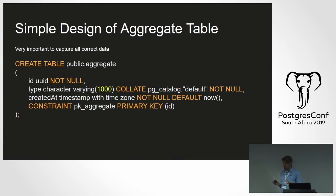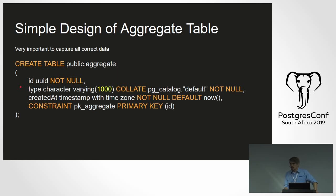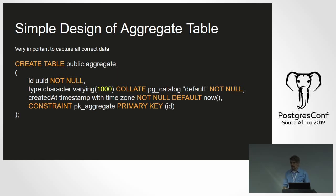Event stores are cool, but there's no cookie-cutter way to implement one. Unless you're doing a greenfield project, it's probably going to need a whole lot of panel-beating to work in any solution. So here's a spoiler: this is what an aggregate table looks like. You want to capture as much important information as you can but also keep it ambiguous so it's open for reuse.